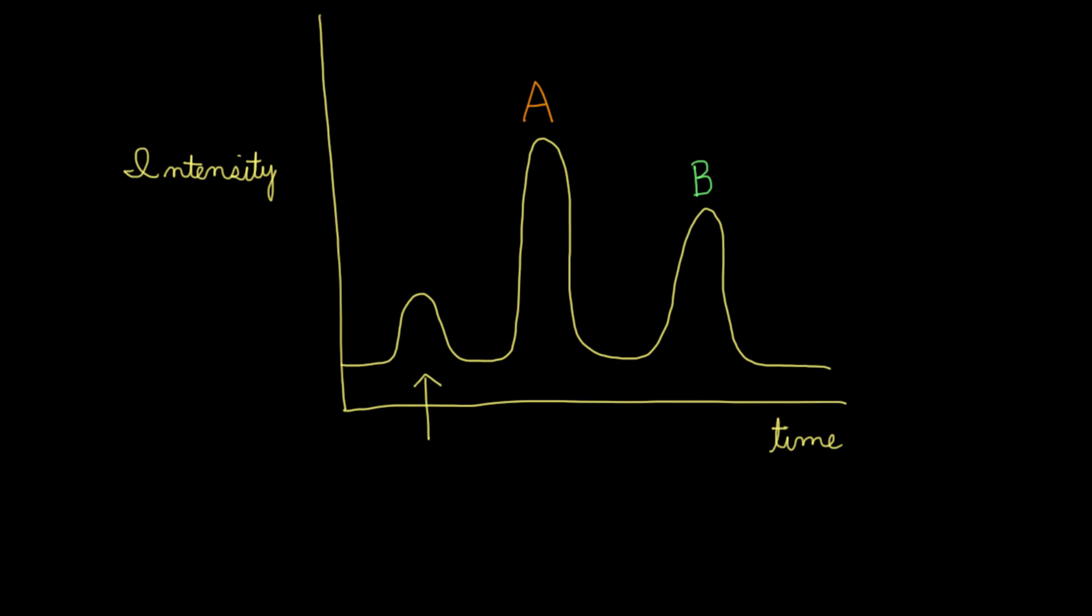But that still doesn't tell us anything about the identities of these exact compounds. What you would really need to do in lab is first run a reference, meaning that earlier you could have run a graph that looked like this and got two peaks. And if you knew that your reference sample was hexane and it looked like they came out at about the same time as compound A, you could probably infer that compound A is hexane, although it's not quite definitive, which is why gas chromatography is usually coupled with other analytical techniques that can give you even more information about the compound. For example, techniques like mass spectrometry tell you about the molecular weight, so that makes it even easier to narrow down what the exact compound is.